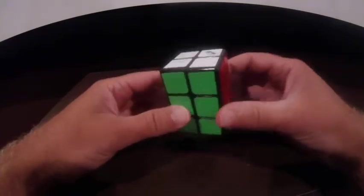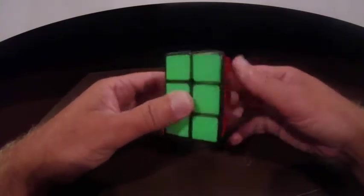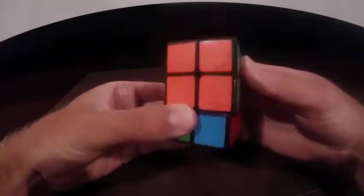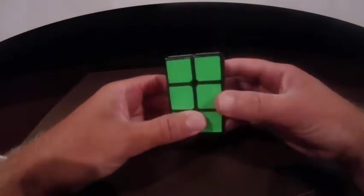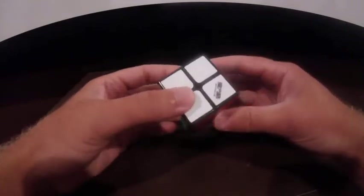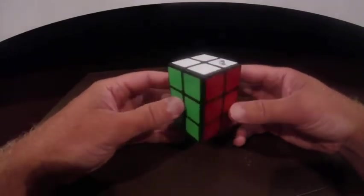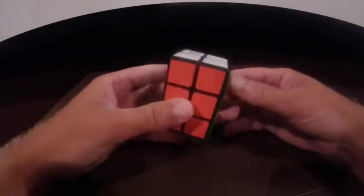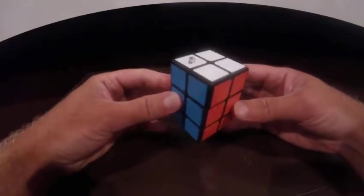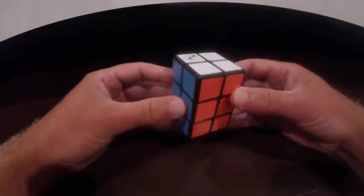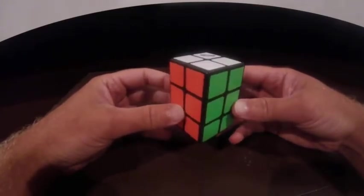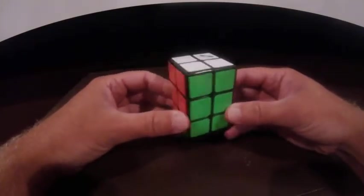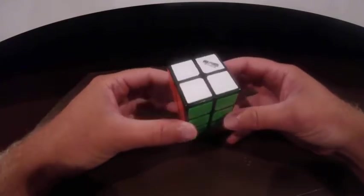So this particular one is not a shapeshifter. No matter how you turn it, it keeps its shape. But there are some out there that do change shapes. I just want to make a quick video about how to solve this one because there's not a lot of videos on these out there. It's fairly simple. There's only two algorithms. So I'll go ahead and mix it up and we'll get started.